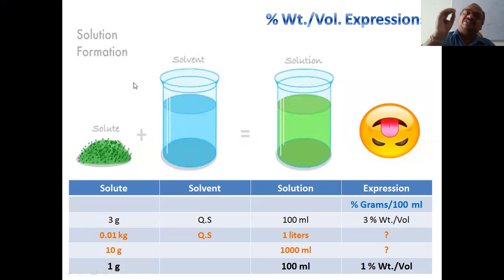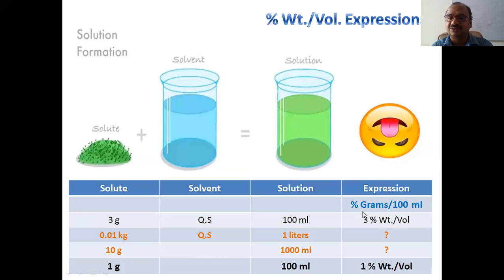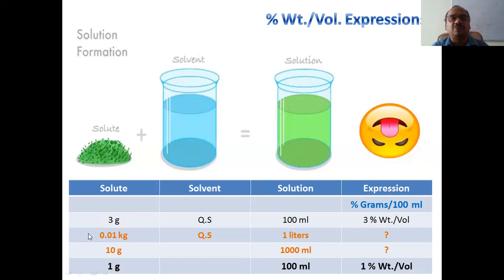Now we will come to the percentage — why we are using the percentage symbol. For percentage weight by volume, the key definition to remember is: percentage means grams per 100 ml. This is very very important — put a frame on that. For example: 3 grams of solute taken, quantity sufficient solvent added, finally made up to 100 ml of solution — that is 3% weight by volume.